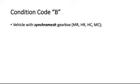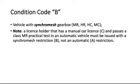Condition code B: vehicle with synchromesh gearbox for MR, HR, HC, and MC classes. Note: a license holder that has a manual car license and passes a class MR practical test in an automatic vehicle must be issued with a synchromesh restriction B, not an automatic A restriction.